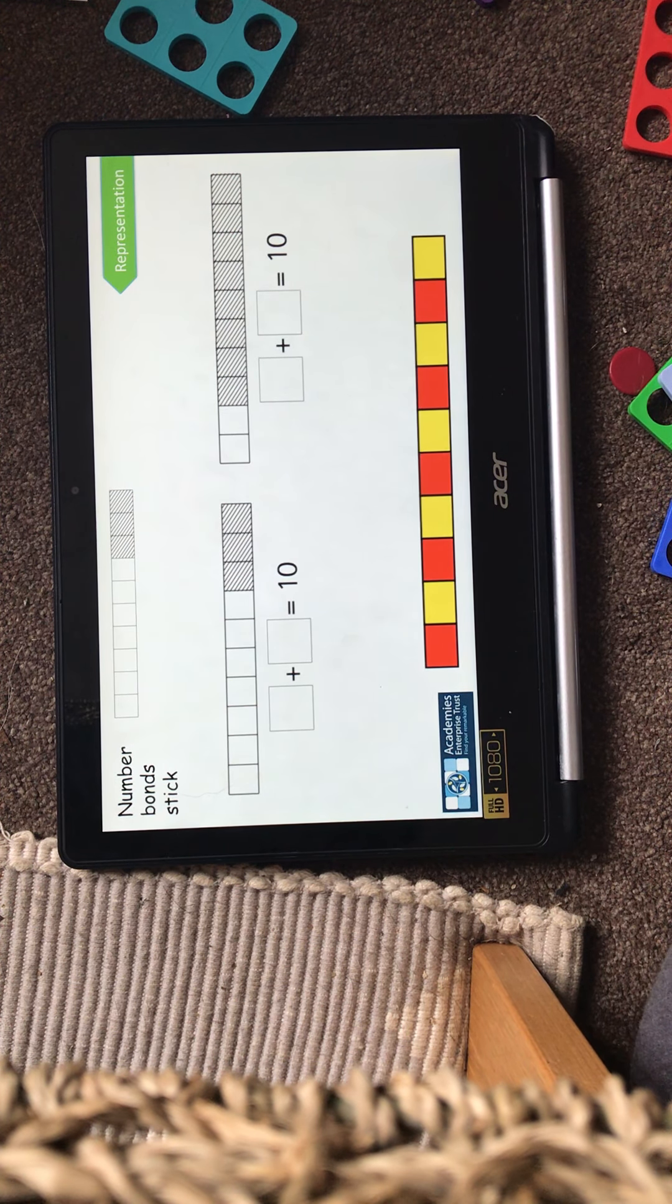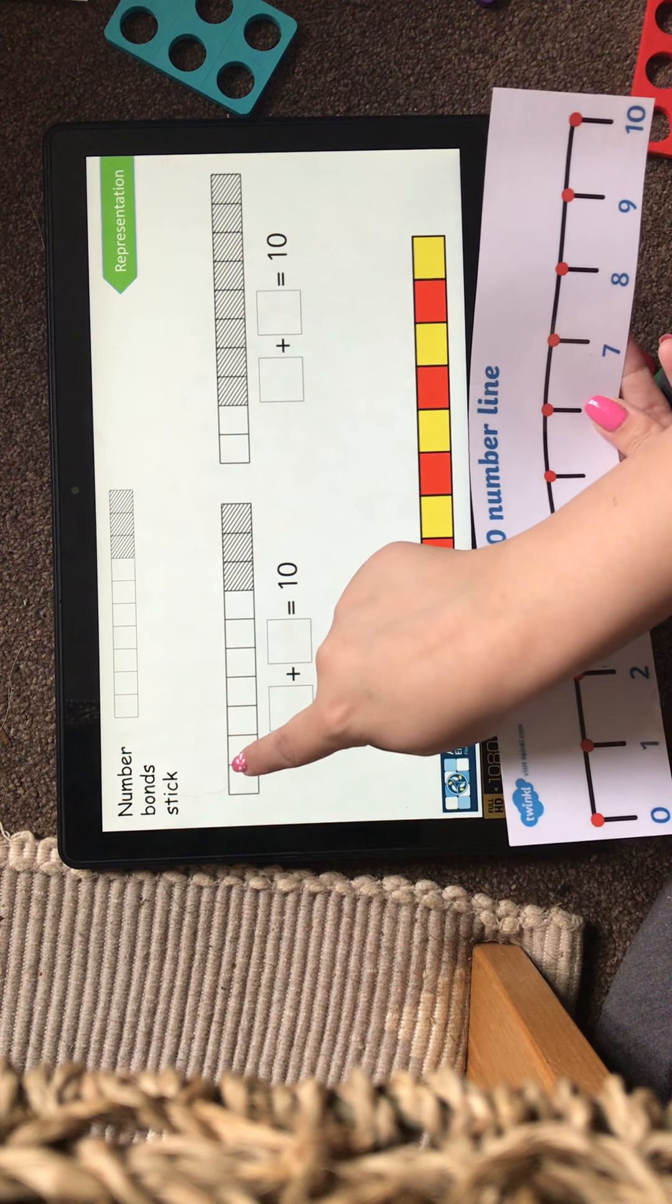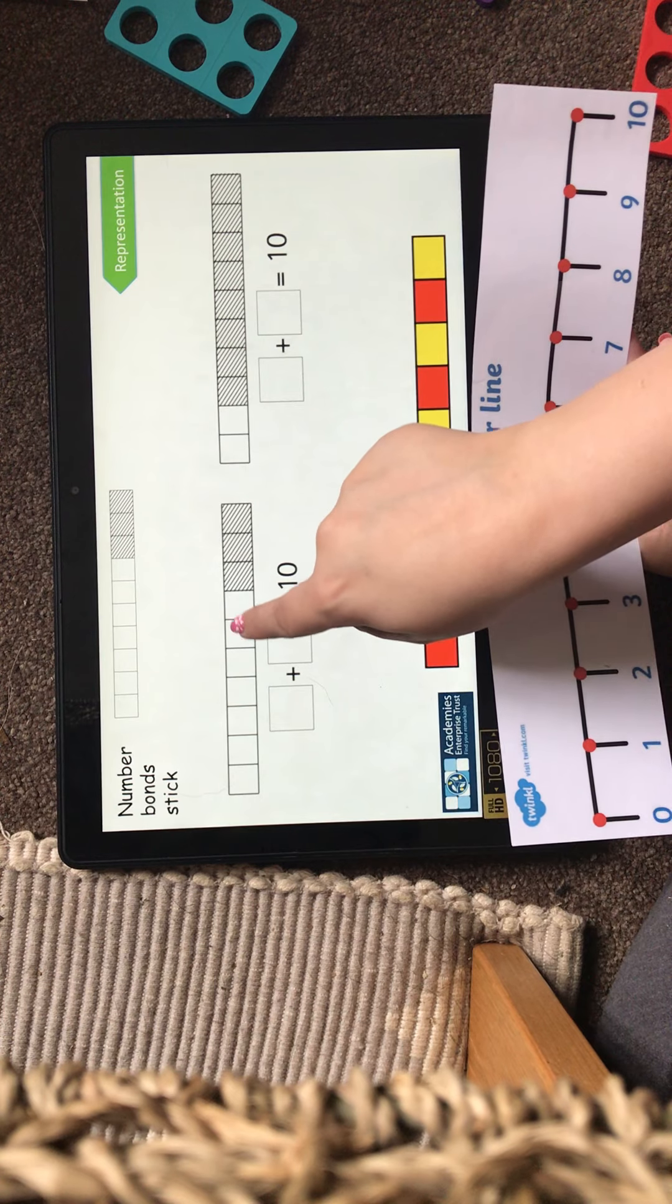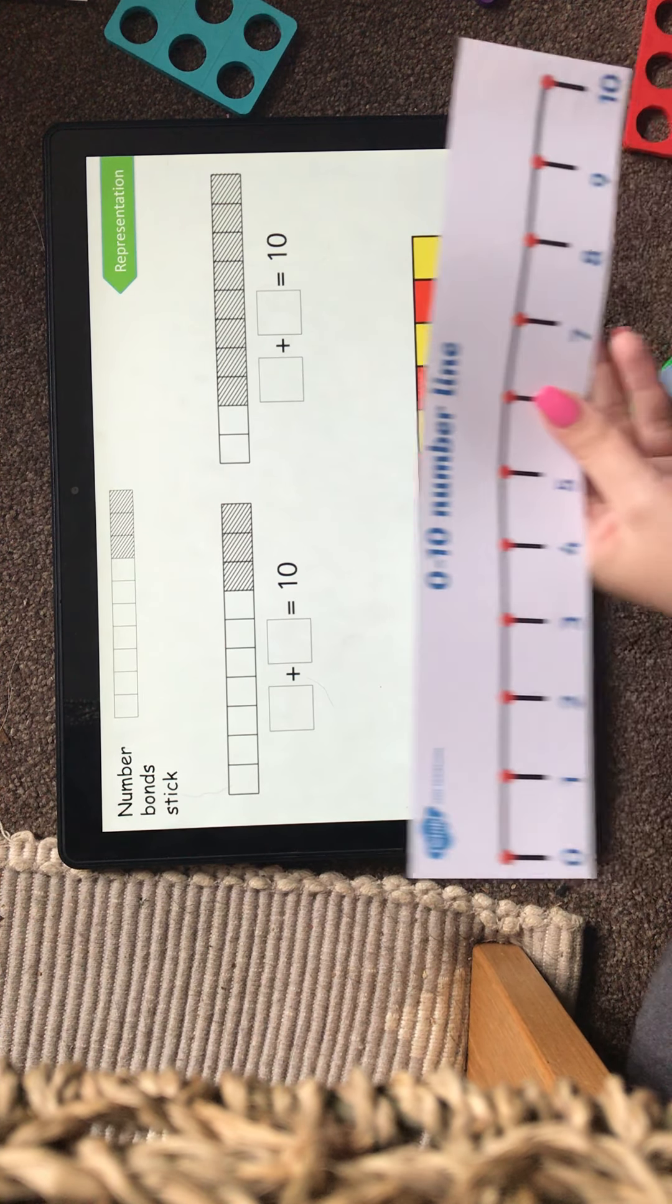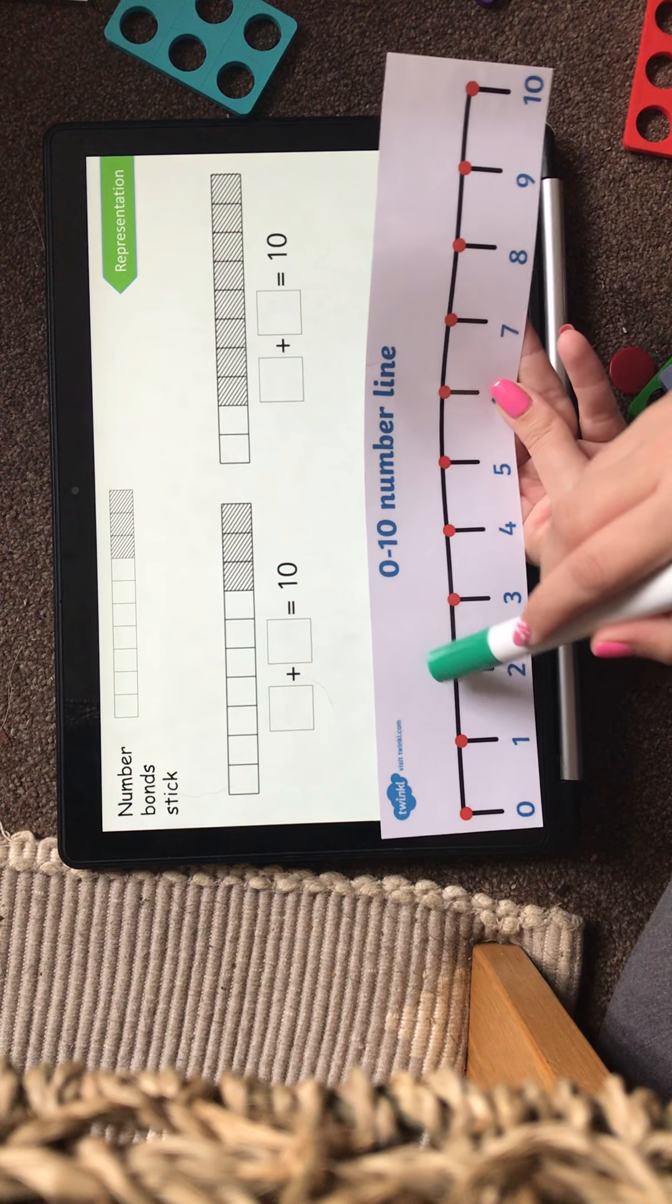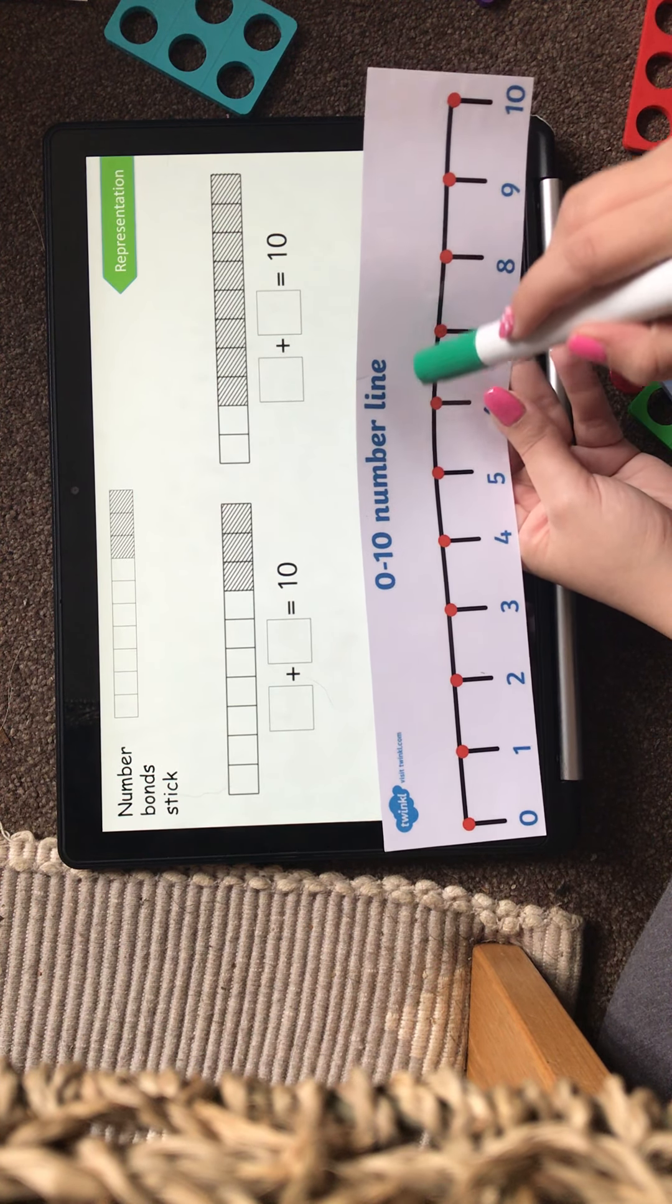This works with a number line as well. So if I use my number line, I know I've got 1, 2, 3, 4, 5, 6, 7. So I can count to 7. 1, so 1, 2, 3, 4, 5, 6, 7.